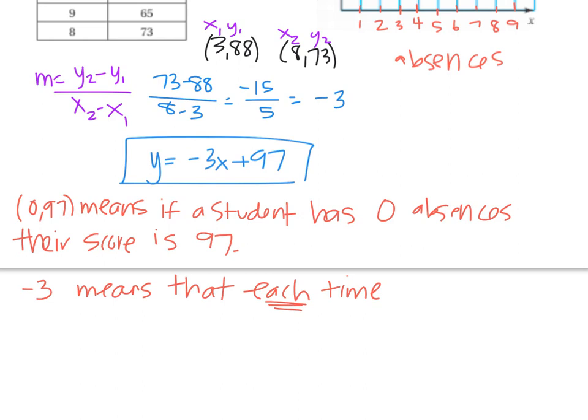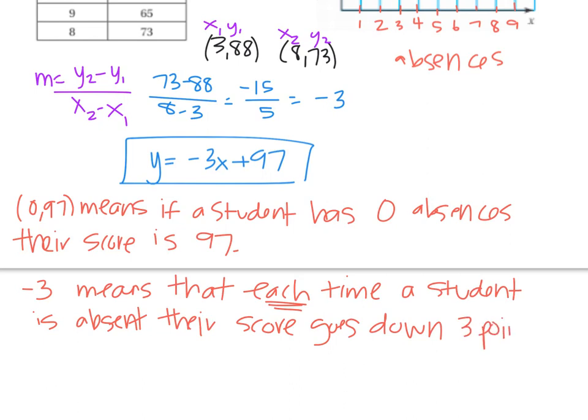So I'm using each. Each time a student is absent, their score goes down 3 points. And again, this isn't a perfect representation. It's just estimating what's happening.